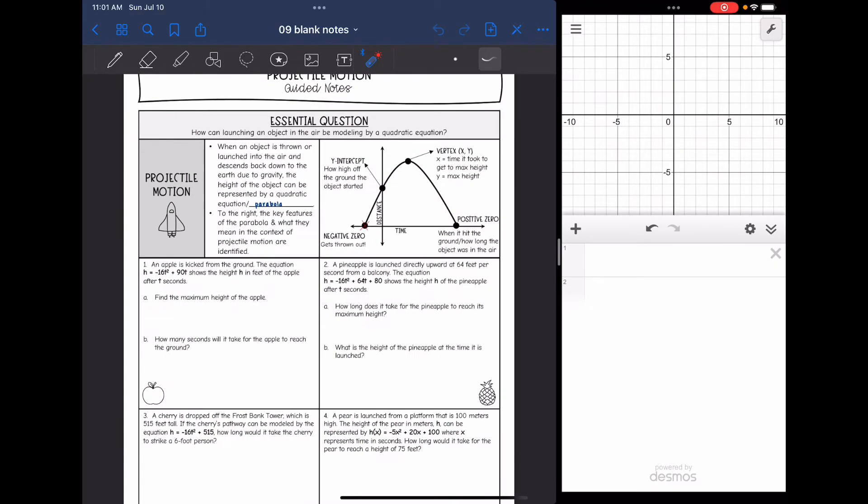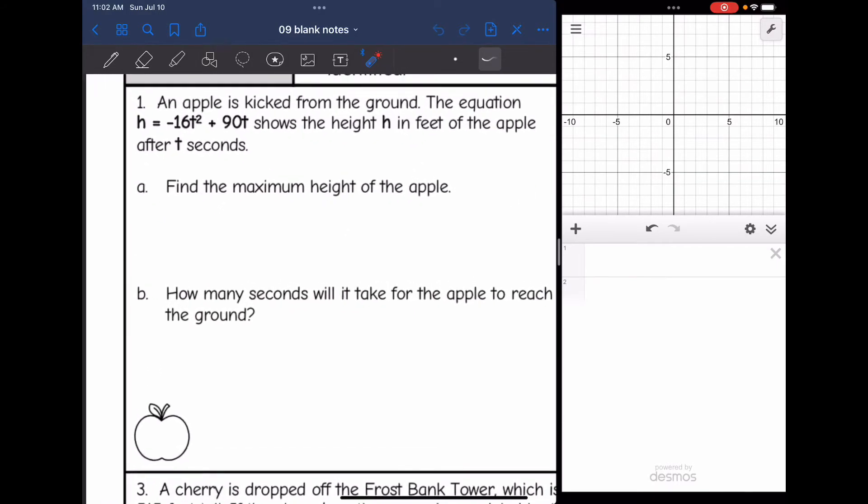We are going to look at four different situations. You can solve these algebraically, like by finding the axis of symmetry by doing x equals negative b over 2a. If we're trying to find the positive zero, you could use quadratic formula. However, since I'm really just looking at the path that's modeled, I like to just graph the equations in Desmos and look at the key features from there. I just want you to know that there are different ways that you can do this.